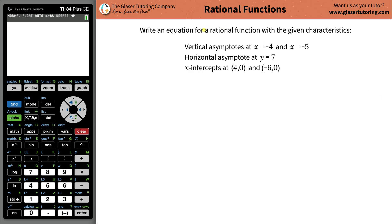Hi, I'm Andrew. Today I'd like to teach you how to write an equation for a rational function given the following characteristics: vertical asymptotes at x equals negative 4 and x equals negative 5, horizontal asymptote at y equals 7, and x-intercepts at 4 and negative 6.